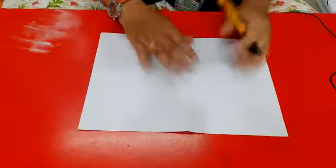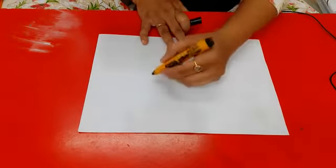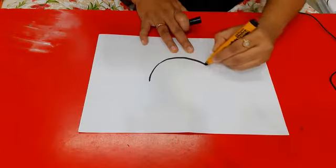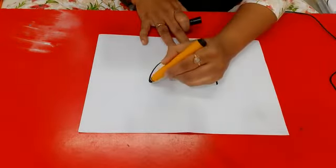In the middle of this page, we are going to draw an umbrella. First, we have to draw a downward open curve. This is a downward open curve.